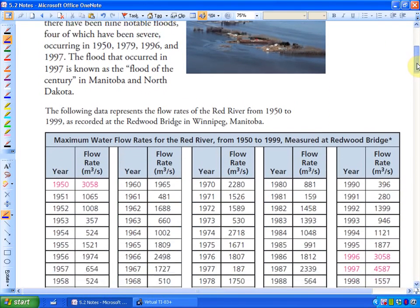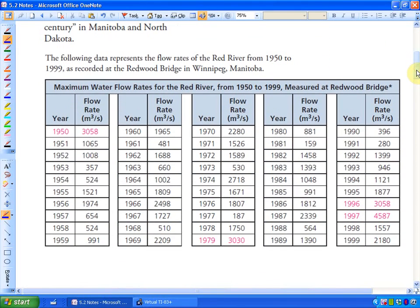The flood that occurred in 1997 is known as the flood of the century, and here is the following data. So the following data represents the flow rates of the Red River from 1950 to 1999 as recorded at the Redwood Bridge in Winnipeg, Manitoba. So they have year by year what the flow rate under the Redwood Bridge in meters cubed per second is at the maximum water flow.